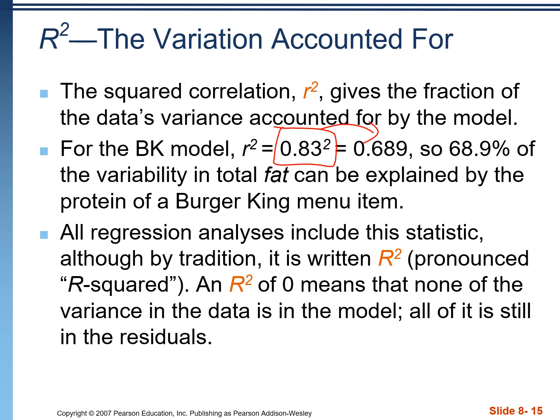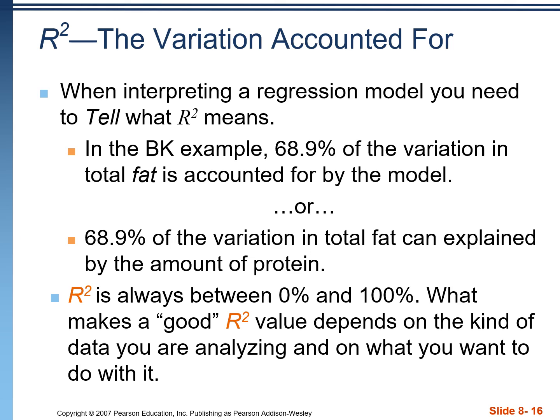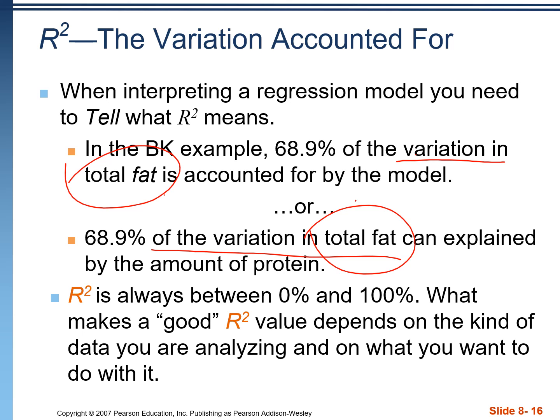100% r-squared is when the data is in a perfectly straight line and there's no variability in the residuals — the residuals are just flat. A 0% r-squared is the reverse: we don't have any form at all on the scatter plot and all of the variation is in the residuals. When writing the r-squared statement, you must be specific: always state what the r-squared percentage is, use the word 'variation,' name the response variable in context, and follow that by saying it's accounted for or explained by the explanatory variable — or simply 'by the model.'